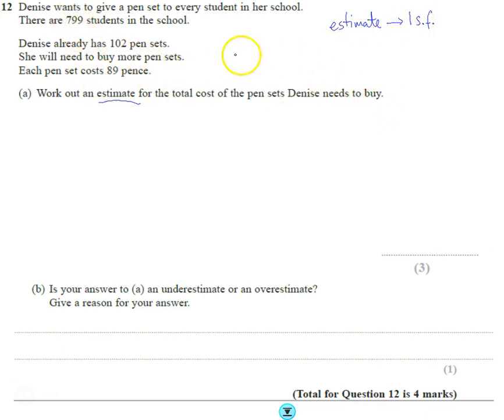So we want to find out the cost of the things you need to buy. Instead of 799 students, we're going to pretend there are about 800 students.